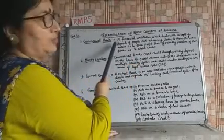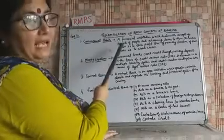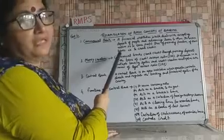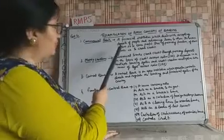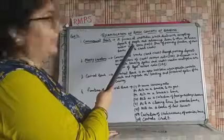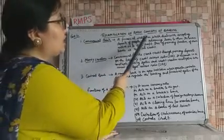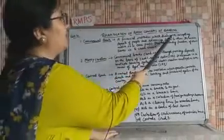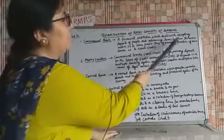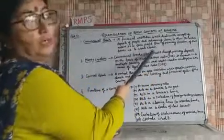Till now we have studied the commercial bank, its functions, as well as how it creates credit, and the functions of the central bank also. Now we are just recapitulating all the basic concepts related to banking. A commercial bank is a financial institution which deals with accepting deposits of people and advancing loans to them. Its main motive is to earn profit.